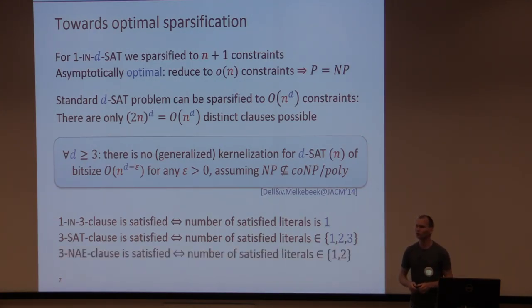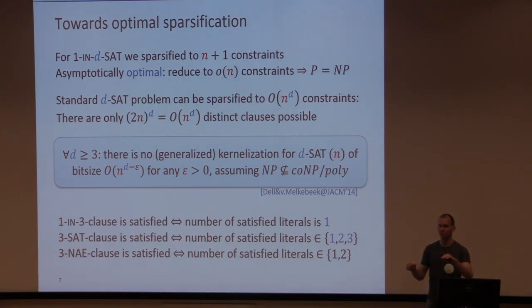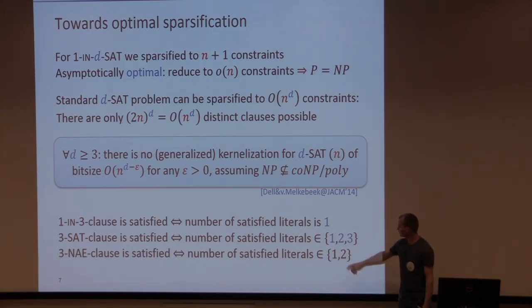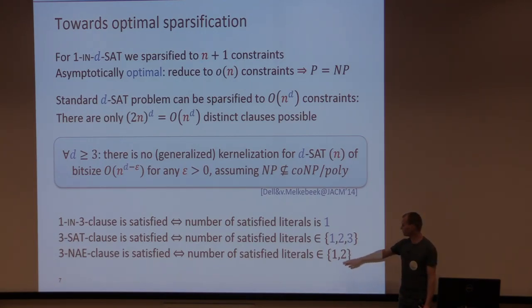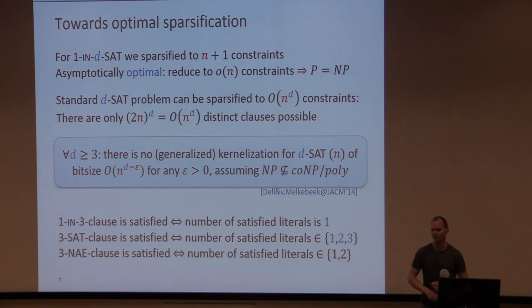Next we look at the not-all-equal SAT problem: three variables where they cannot all take the same value, so the number of satisfied literals is either 1 or 2. This freedom of 2 will determine the optimal sparsification size — we can sparsify to O(n²) constraints.